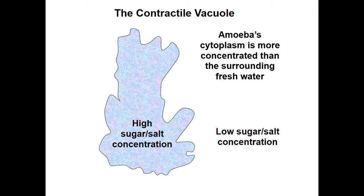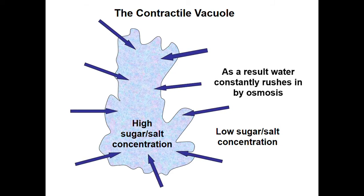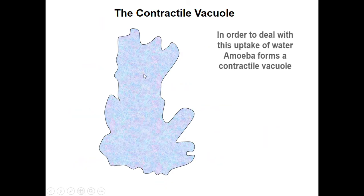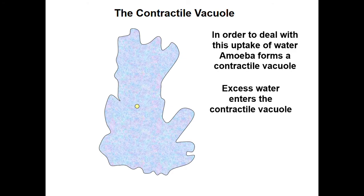That's where the contractile vacuole comes into the picture. This is the osmosis I'm talking about — particles from the outer side are at a lower concentration and the inner side is at a higher concentration, so water keeps pouring in, making the amoeba bulge and potentially burst. To avoid this, a small vacuole gets created at the center of the amoeba — that's called the contractile vacuole.